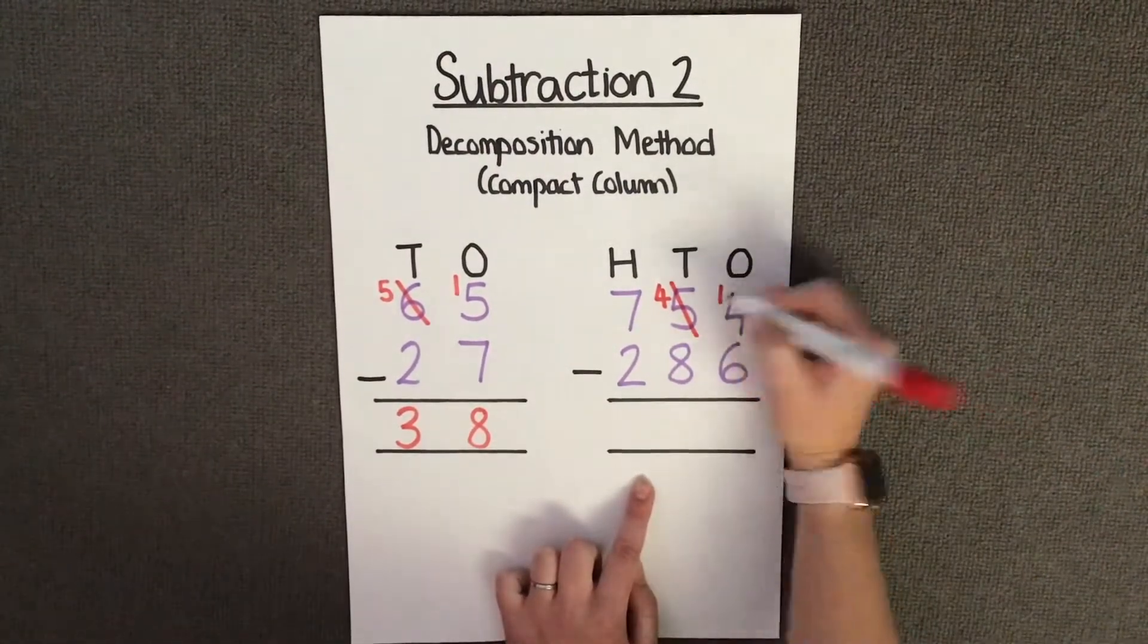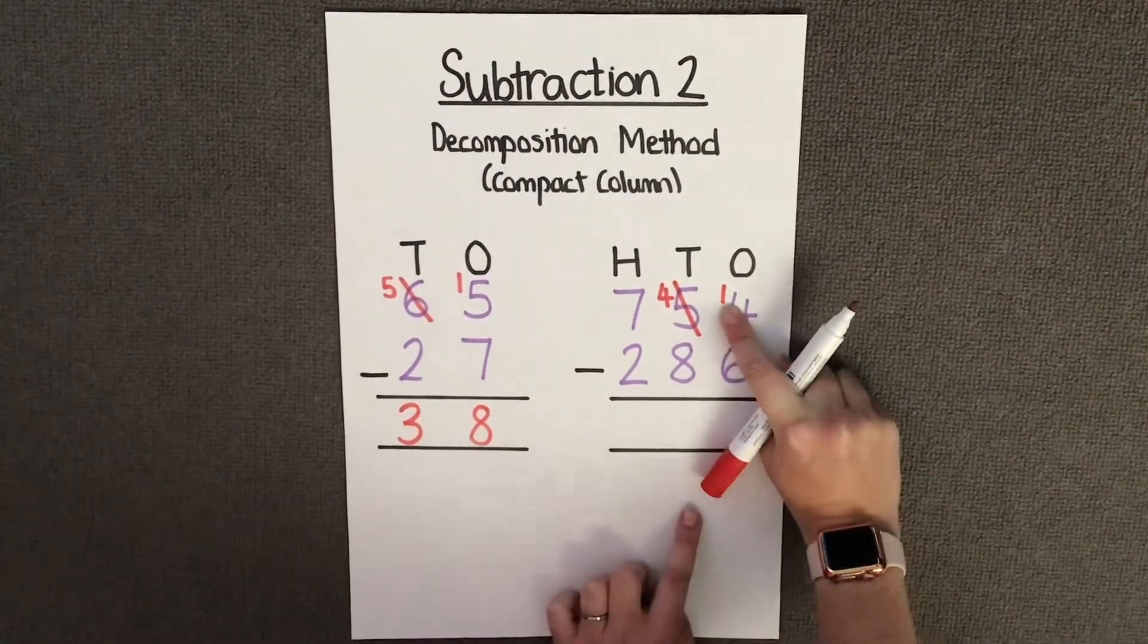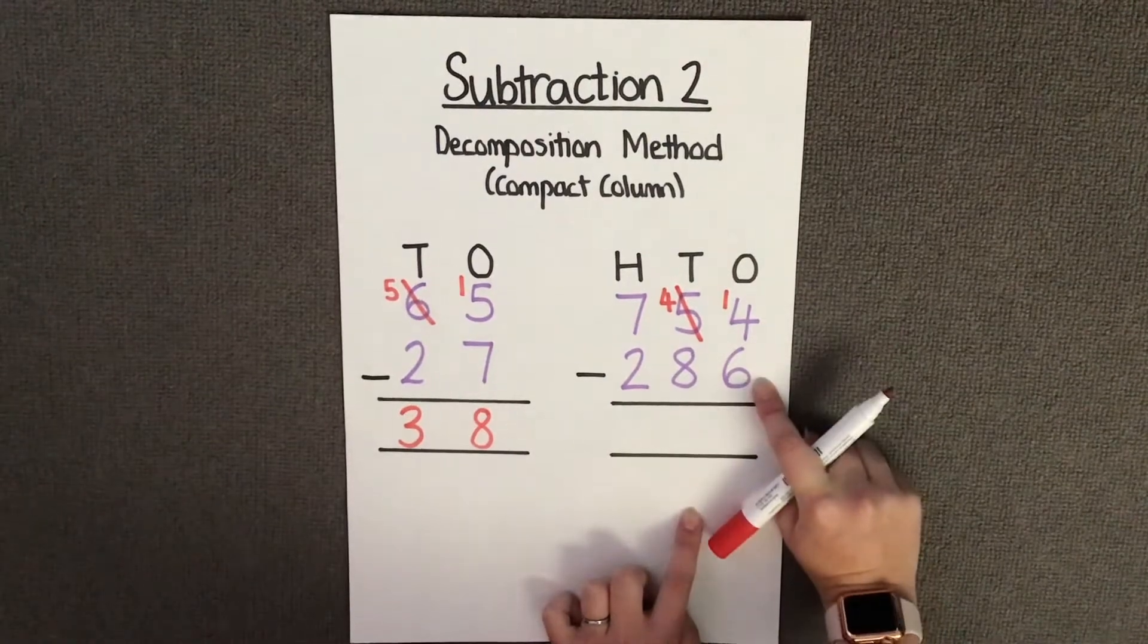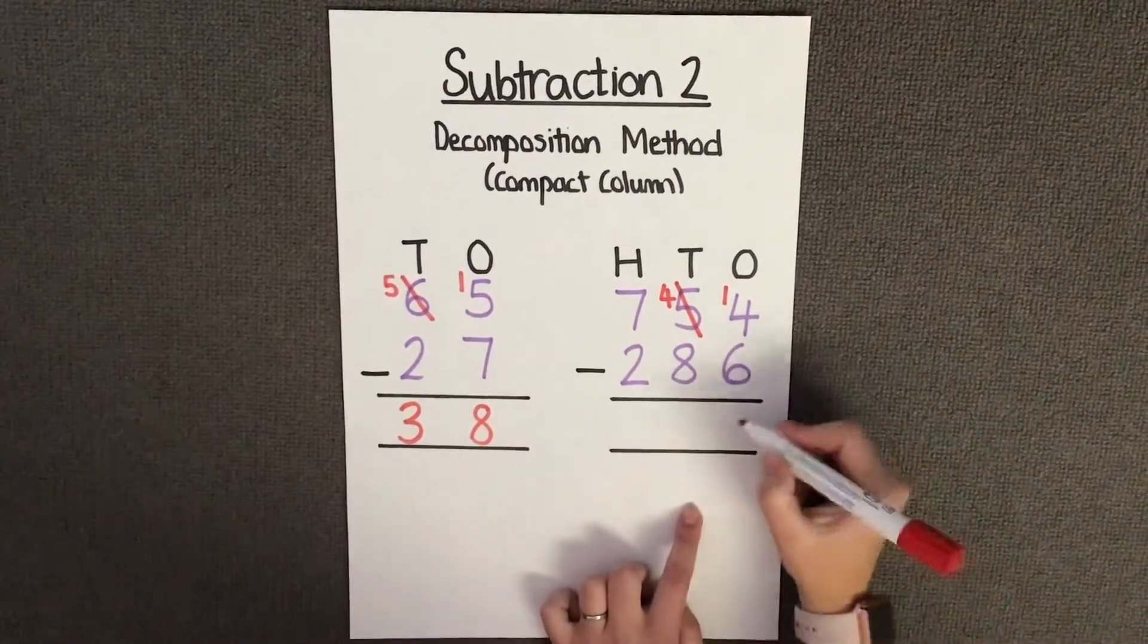And I'm going to give the ones that carried 10. This leaves the ones column with 14 ones. And I'm going to take away 6 ones, which is 8 ones.